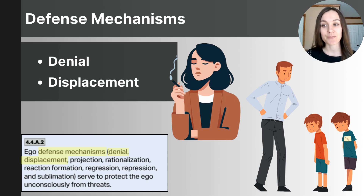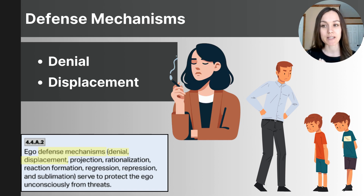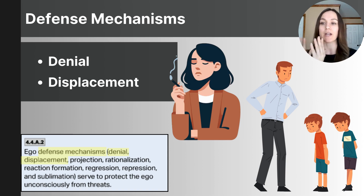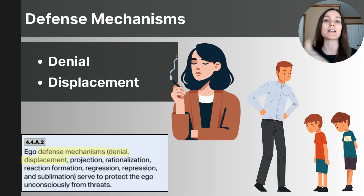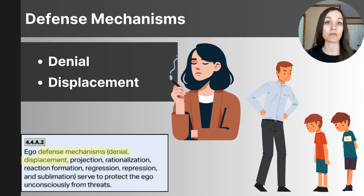The first defense mechanism is denial — refusing to accept reality because it's too painful to acknowledge. For example, a smoker using denial might insist that smoking isn't harmful despite clear evidence. The second is displacement — redirecting emotions from their original source to a less threatening source. For example, after a stressful day at work, a parent might displace frustrations from their boss onto their family by yelling at their children when they get home instead of addressing the frustrations at work.